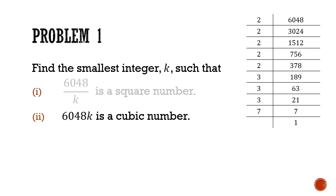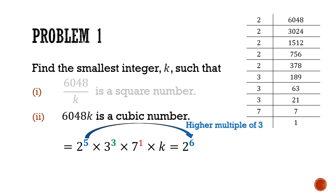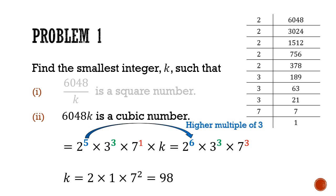Using the same prime factorization, to get a cubic number by multiplying k, we raise each prime's index to the next higher multiple of 3. So 2 to the power of 5 becomes 2 to the power of 6, 3 cubed stays as it's already a multiple of 3, and 7 to the power of 1 goes up to 7 cubed. This means k must be 2 times 7 squared, which is 98. Checking with a calculator confirms this works.